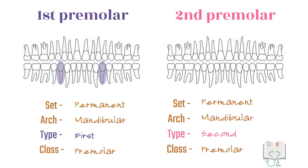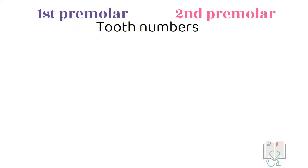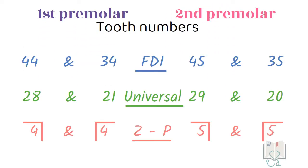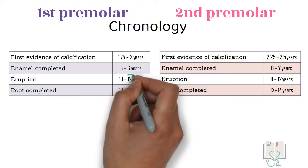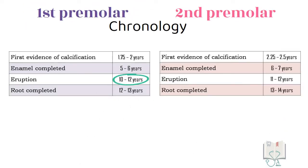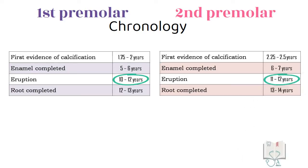The mandibular first premolar is the fourth tooth from the midline and the second premolar is the fifth tooth from the midline. This gives the two teeth different tooth numbers in various tooth numbering systems. Chronologically, the first premolar erupts at the age of 10 to 12 years and the second premolar at the age of 11 to 12 years.